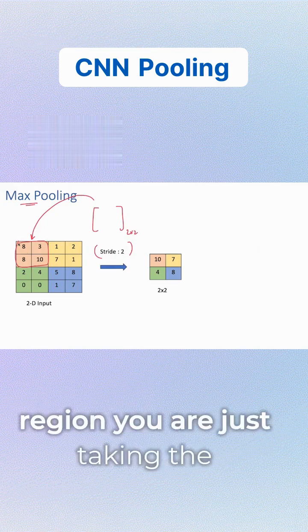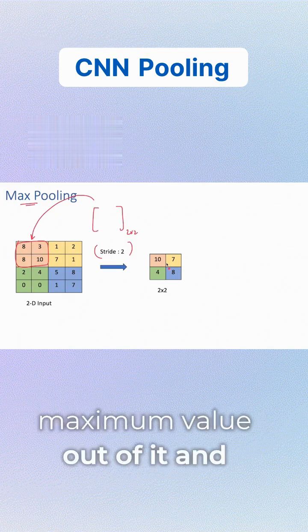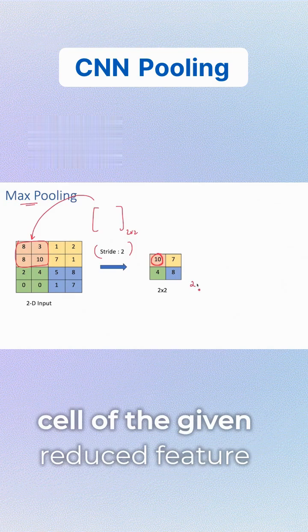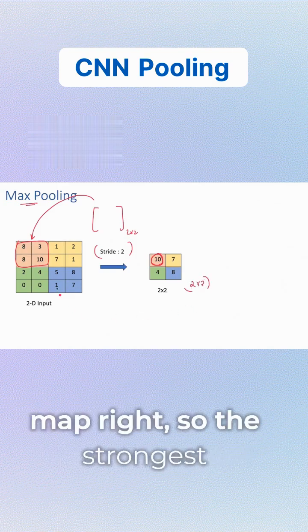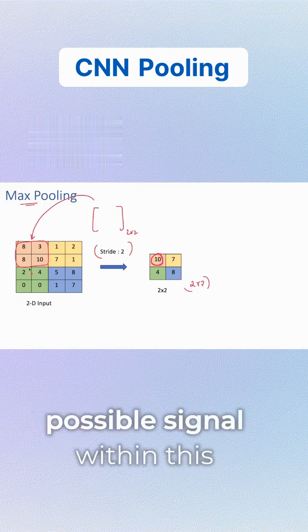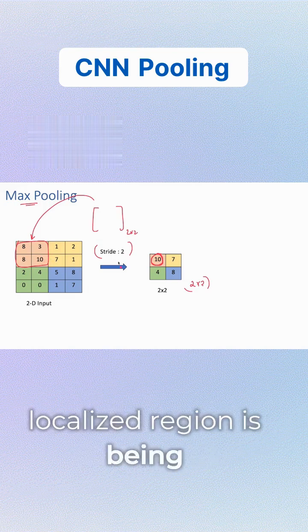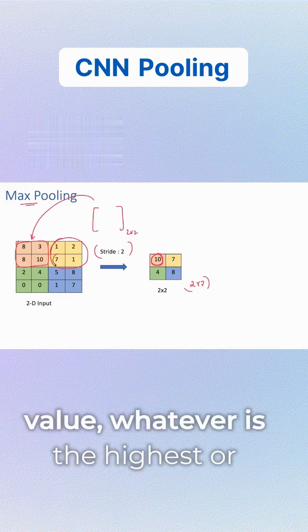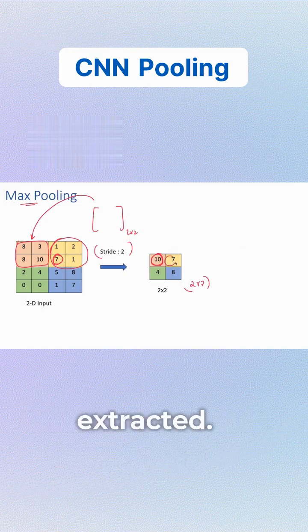Within every localized region, you take the maximum value and assign it to the output cell of the reduced feature map. The strongest possible signal within each localized region is extracted. Likewise, in the next localized region, the highest or maximum value is extracted.